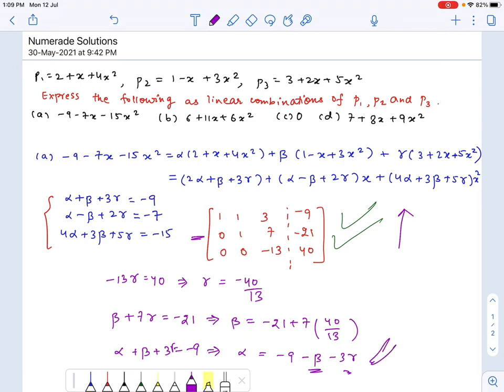Similarly you can do this for every other polynomial as well. And this one is the trivial one - this is 0 times P1 plus 0 times P2 plus 0 times P3.